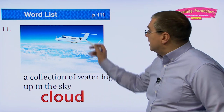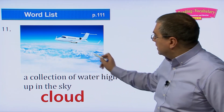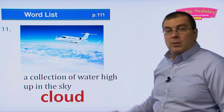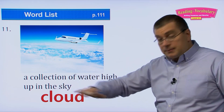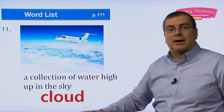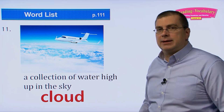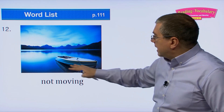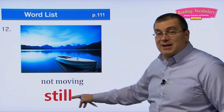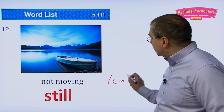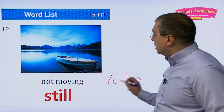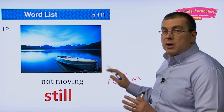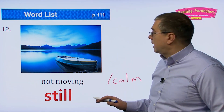Number eleven: a collection of water high up in the sky — that's a cloud. This airplane is flying over beautiful clouds. If you're ever on an airplane, look out the window and you can see the clouds below — very white, fantastic, and beautiful. Number twelve: not moving — still. The water in this lake is very still. We can also say calm — no motion, peaceful.